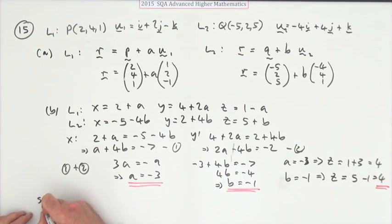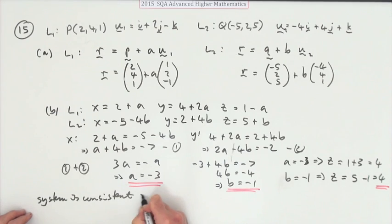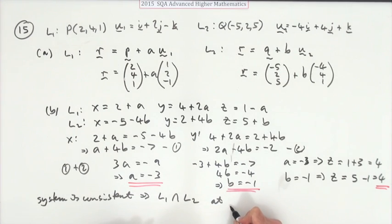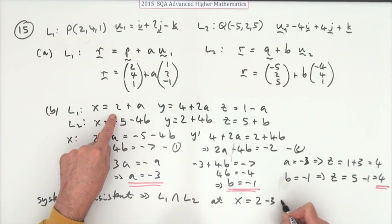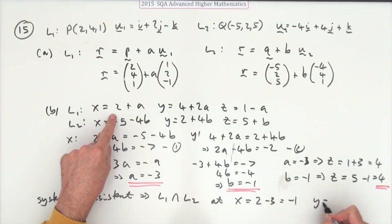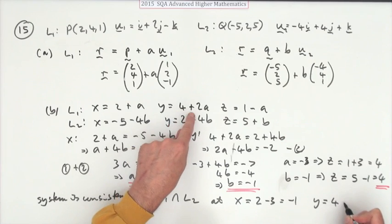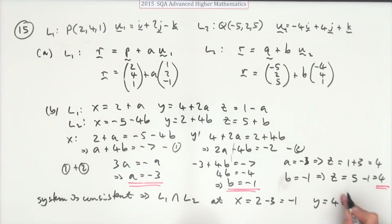So you could say that system is consistent, which means L₁ intersects L₂, just to be brief, very fancy, at, now where is it? x equals, just choose one of them, you should be confident that'll work on them both. So if I just go for this one here, at x equals 2 minus 3, which equals negative 1, y equals 4 plus two lots of it, so that's 4 minus 6, which is negative 2, and I've already worked out that z is 4. So at the point negative 1, negative 2, 4.